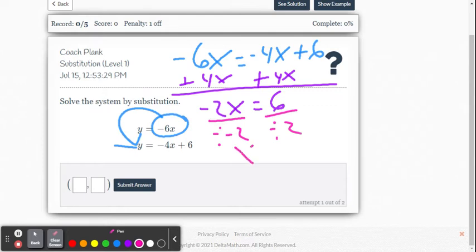And so we get x equals, that was negative 2 there, 6 divided by negative 2 is negative 3. Good.